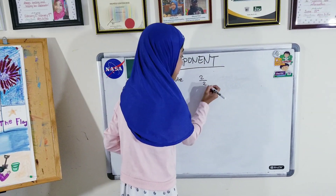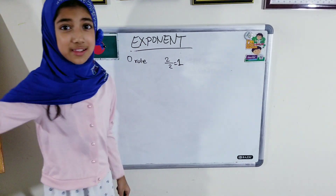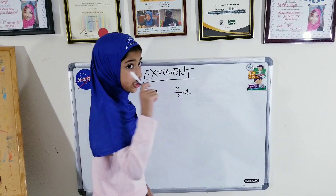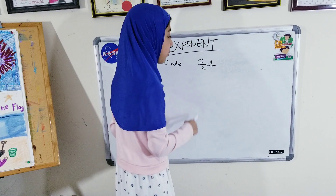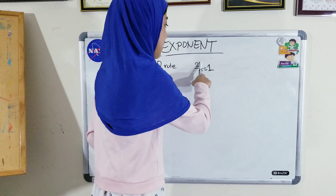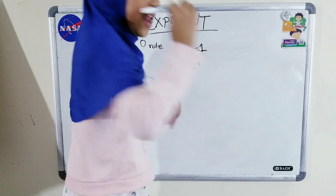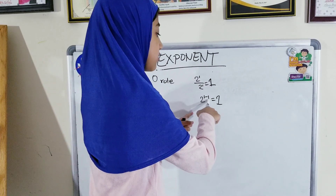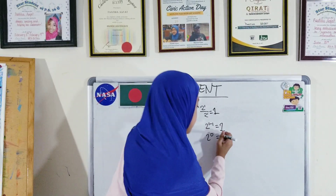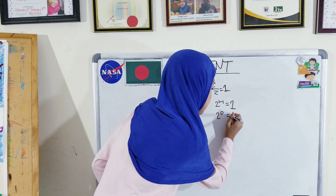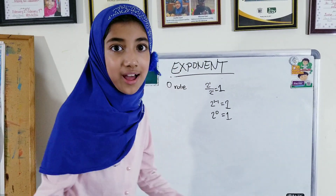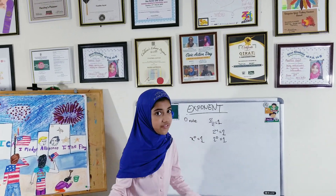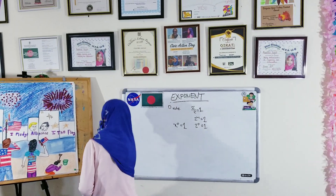The zero rule is that, for example, let's say we have 2 divided by 2. Everybody knows that equals 1. But if we go a little deeper, we know that there's an exponent 1 here and also exponent 1 here, which actually means 2 to the power of 1 divided by 2 to the power of 1. When we do this, we keep the base the same and subtract the exponents: 1 minus 1, which equals 0. So 2 to the power of 0 equals 1. I'm going to prove this in the algebraic way: x to the power of 0 always has to be equal to 1. So that is the zero rule.